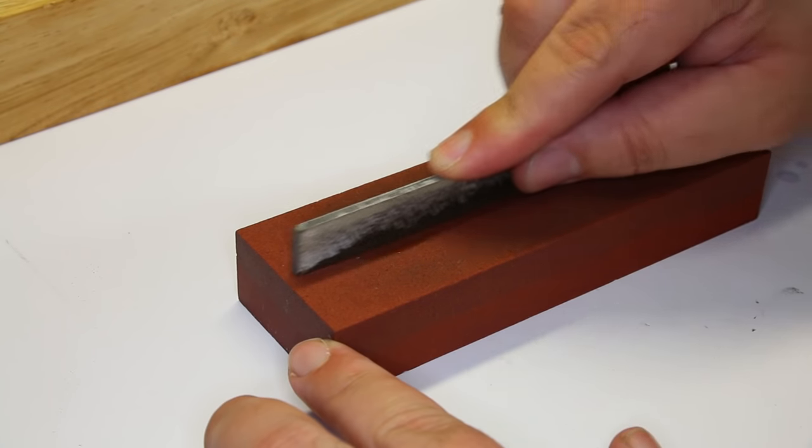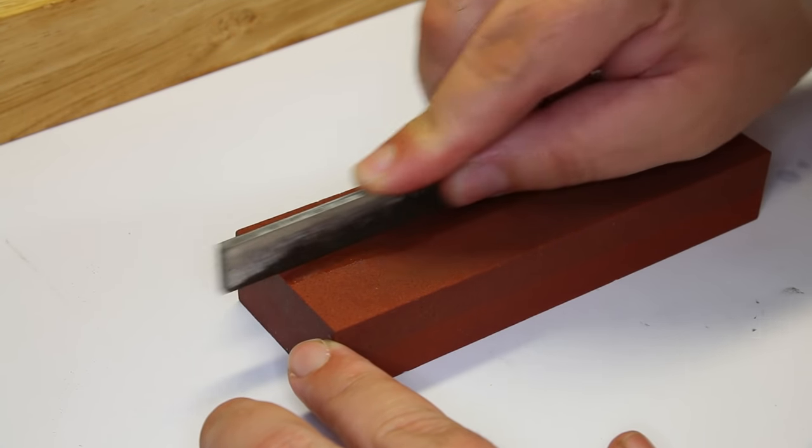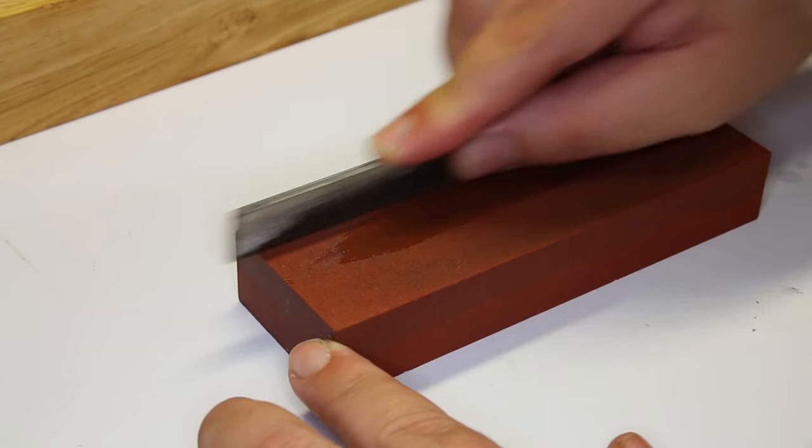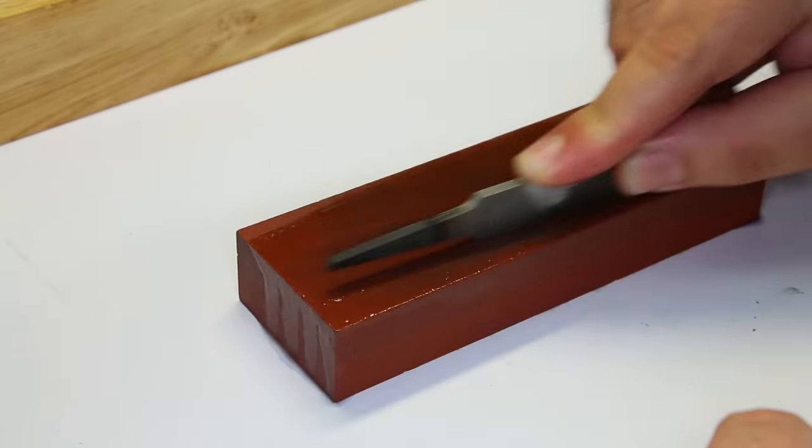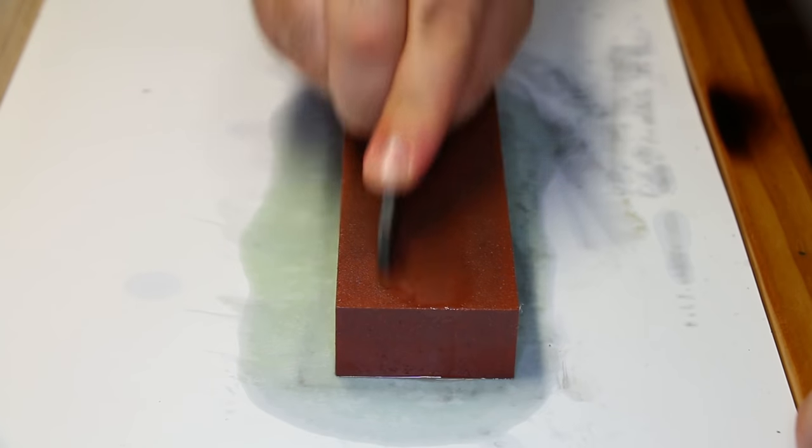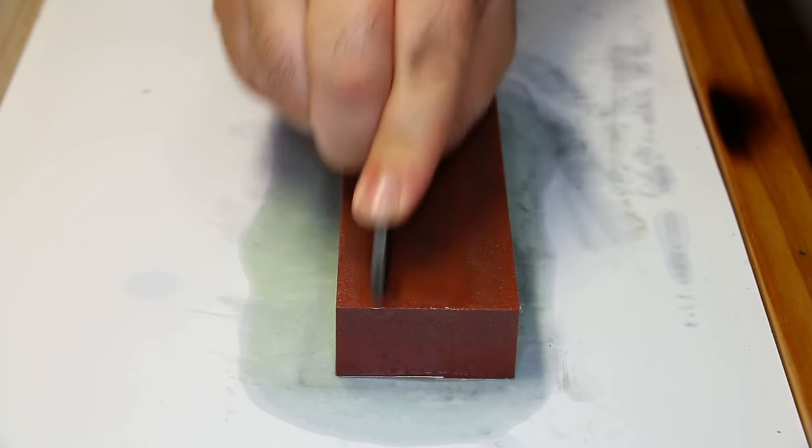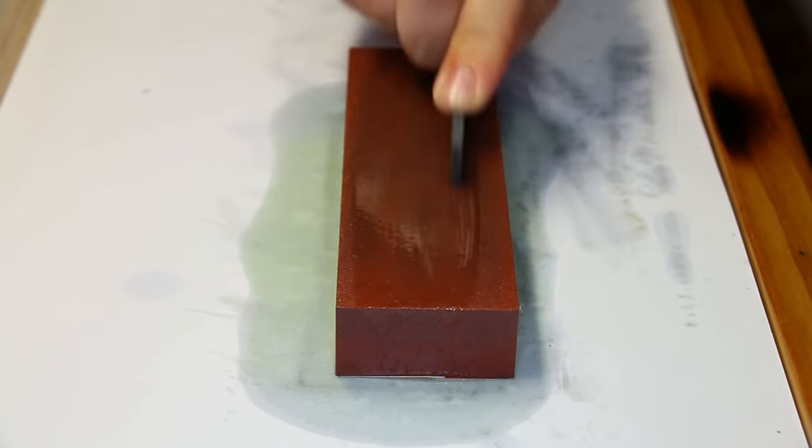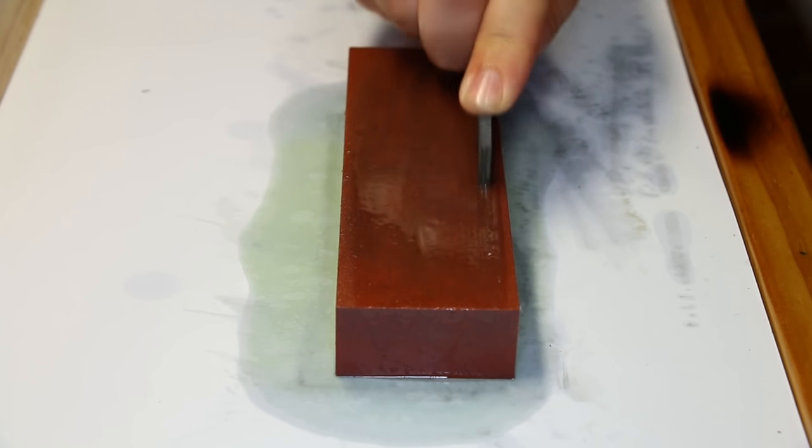Hold the file as straight as possible, trying to distribute even pressure across the full length. After practicing, you'll start to be able to feel which parts of the tool are making contact with the stone. It's important to hone over the whole stone and not to concentrate in one place as it will eventually start to groove the stone in that area.